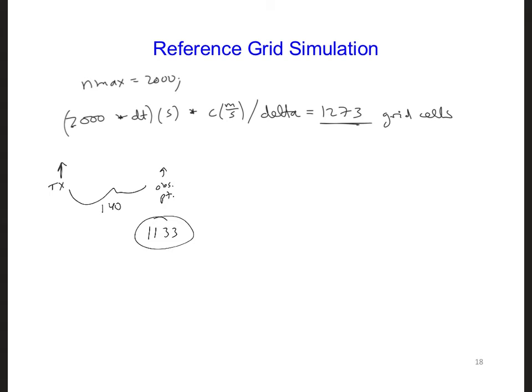But because there is a round trip propagation distance from the observation point to the right edge of the bigger grid and back again to our observation point, we only actually need to add half of this number of cells to our grid. So the large Imax needs to be 140 plus 1,133 divided by 2, which gives us about 707 grid cells.